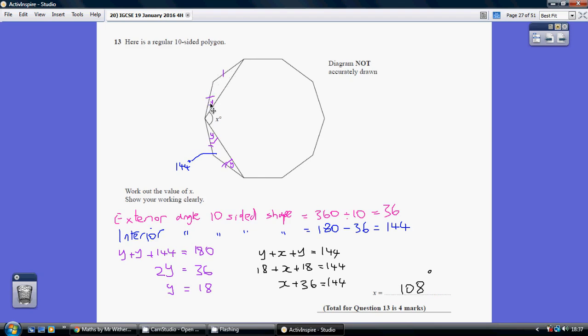So, let's call this angle here, y and y and y. This would also be a y. Now, we know the angles in a triangle add up to 180, so these three angles together, y plus y plus 144 equals 180, so that means that y must be 18 degrees.